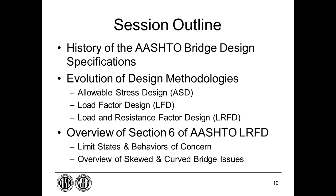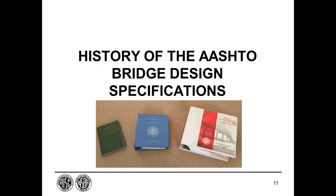Important design issues related to skewed and horizontally curved steel bridges will also be briefly reviewed. We'll also provide a broad overview of the present-day load and resistance factor design specifications, primarily focused on Section 6 of the bridge specification on steel structures, and the various limit states and associated behaviors of concern at each limit state for different types of members used in steel bridges.